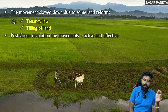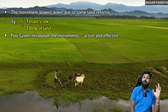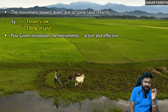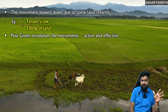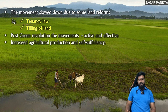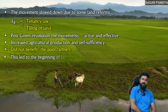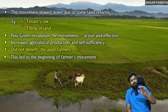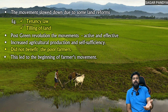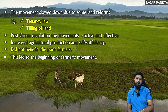Post green revolution, movements were active and effective. The green revolution in India was because of Dr. M.S. Swaminathan. After the green revolution, all subsequent movements were active and effective. There was increased agricultural production and self-sufficiency, but obviously it did not benefit the poor farmers. That is why this led to the beginning of the farmers movement — because the benefits were only going to rich farmers. Whatever facilities the government provided, rich farmers were taking them all, and nothing was left for poor farmers.